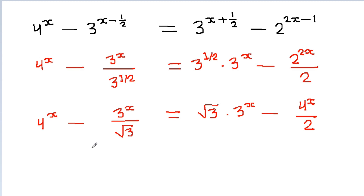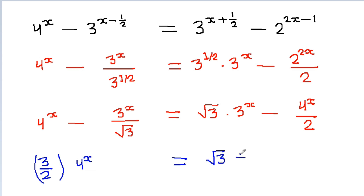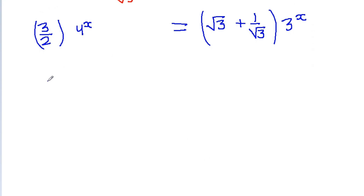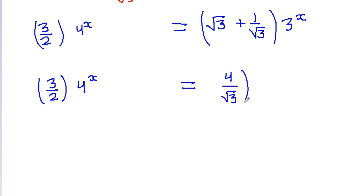So we get 1 plus 1/2, which is 3/2, times 4 to the power x, is equal to root 3 plus 1 over root 3 times 3 to the power x, which gives us 3 by 2 times 4 to the power x is equal to 4 over root 3 times 3 to the power x.